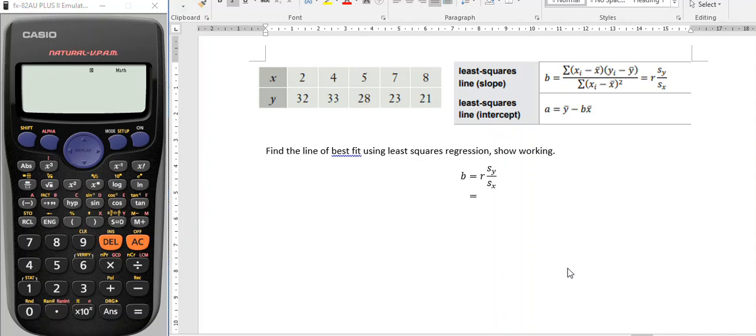Hi everyone, this is a quick video to demonstrate how to find a least squares regression line using a Casio FX82 calculator. This is my emulator here. So this is my data set for the x and the y values. These are the formulae from my formula sheet that I have access to show my working.